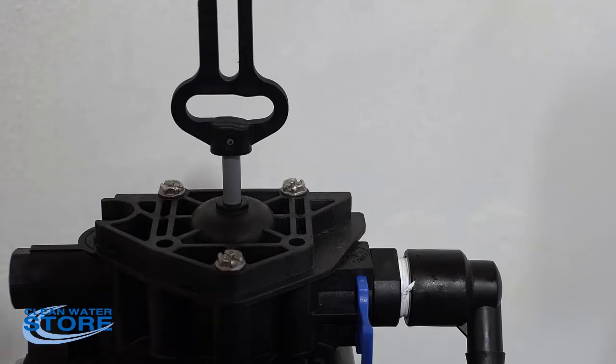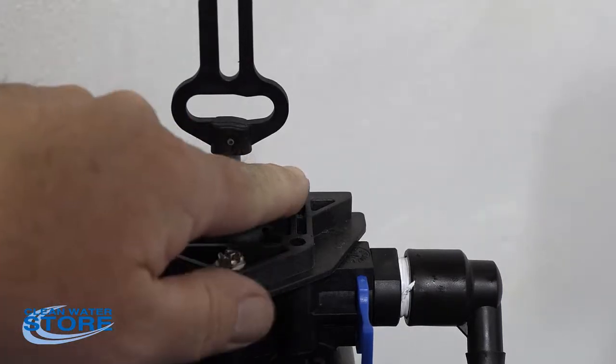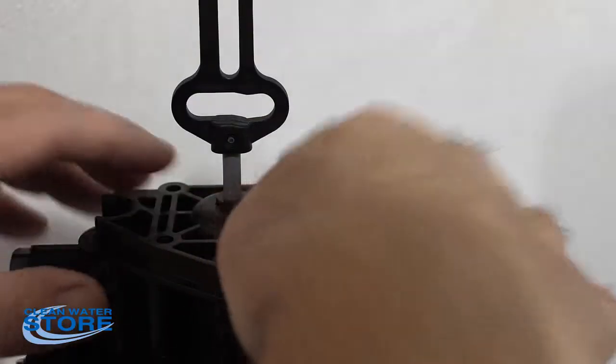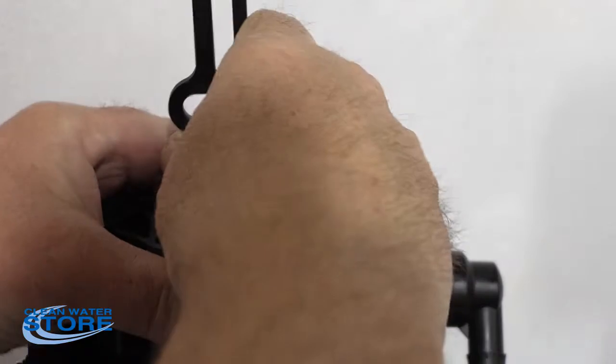Okay, the next thing we're going to do is remove these three screws here, and this will pull the valve body assembly out from the seals. Now that we have those three screws removed, we'll go ahead and simply pull this up.